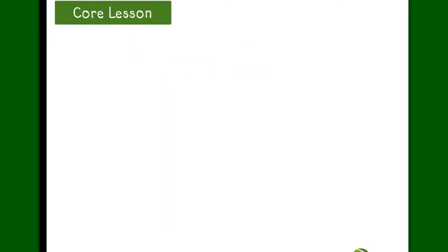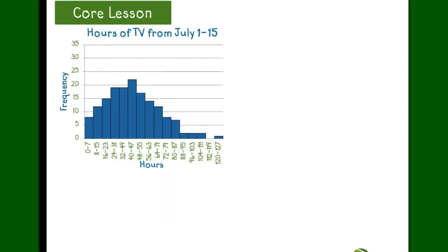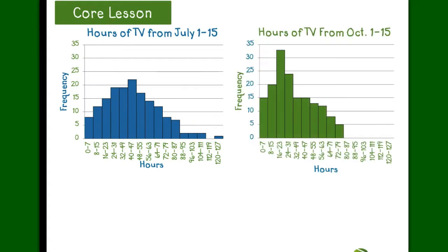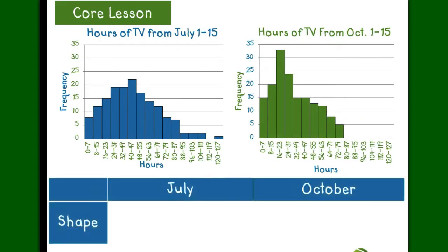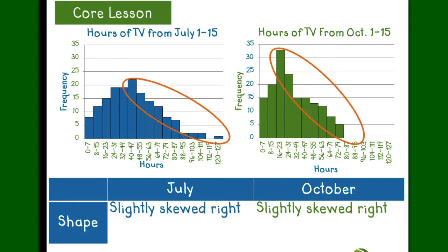Let's go back to our data. Let's start off by looking at the shape of both histograms. Both of the charts are slightly skewed right, and we also see that there's only one peak, making it unimodal.